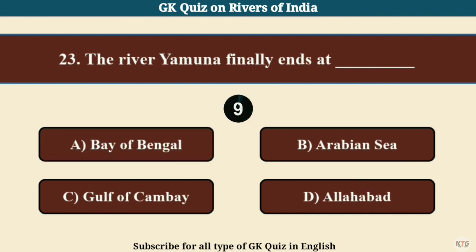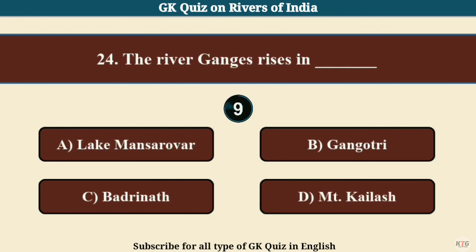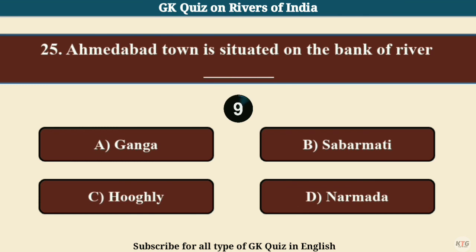Question 23: The river Yamuna finally ends at? Answer D: Allahabad. Question 24: The river Ganges rises in? Answer B: Gangotri. Question 25: Ahmedabad town is situated on the bank of which river? Answer B: Sabarmati.